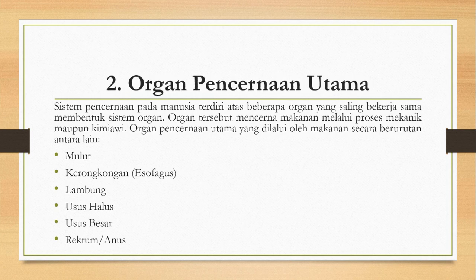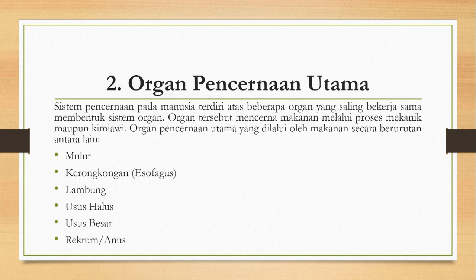Organ pencernaan utama. Sistem pencernaan pada manusia terdiri atas beberapa organ yang saling bekerja sama untuk membentuk suatu sistem organ. Organ-organ tersebut mencerna makanan melalui proses mekanik maupun proses kimiawi. Organ pencernaan utama yang dilalui oleh makanan secara berurutan antara lain: mulut, kerongkongan atau esofagus, lambung, usus halus, usus besar, dan yang keenam rektum dan anus.